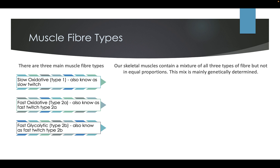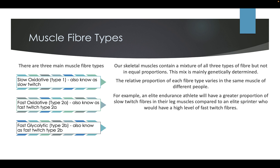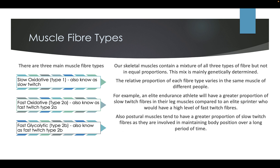Our skeletal muscles contain a mixture of all three of these fibres, but not in equal proportions. The mix is mainly genetically determined. The relative proportion of each fibre type varies in the same muscle of different people. Postural muscles tend to have a greater proportion of slow twitch fibres as they involve maintaining body position over a long period of time.